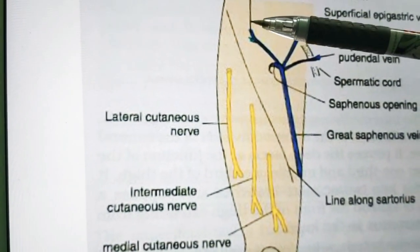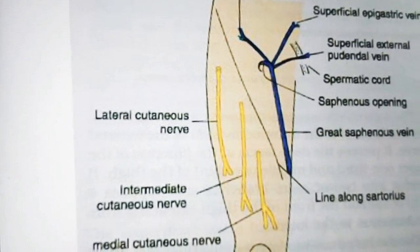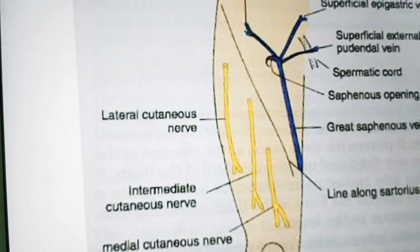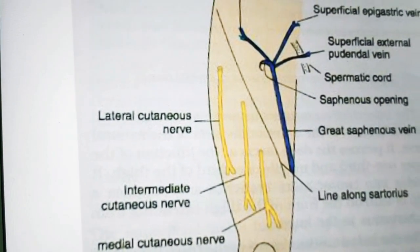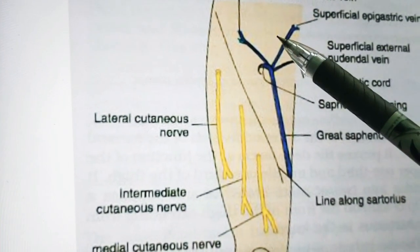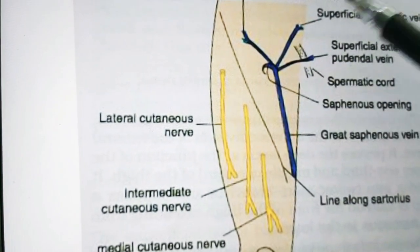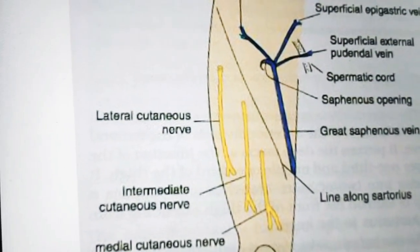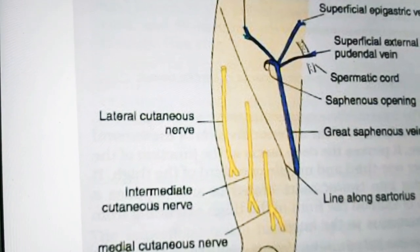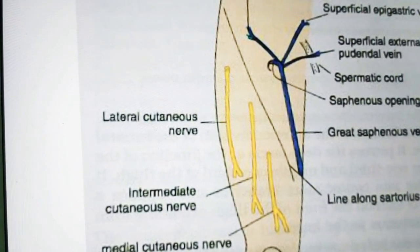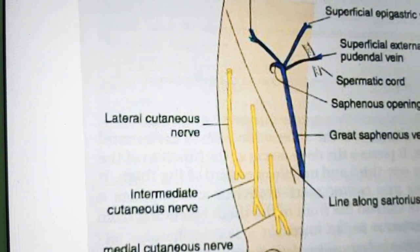The inguinal ligament extends from the anterior superior iliac spine to the pubic tubercle. The downward convexity of the ligament is mainly due to the pull exerted by the fascia lata of the thigh, which we will also discuss. The pubic tubercle is a small bony projection felt at the medial end of the fold of groin.